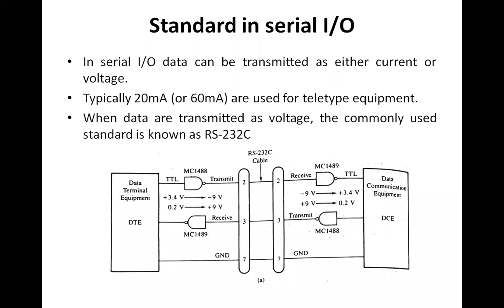However, the voltage levels of RS-232C are not very compatible with transistor-to-transistor logic (TTL) levels. The rate of data transmission in RS-232C is restricted to a maximum of 20 kilobaud for a distance of 50 feet.